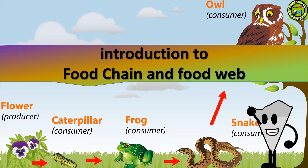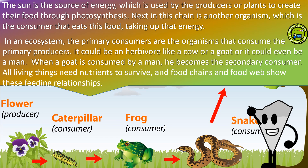Introduction to Food Chain and Food Web. The Sun is the source of energy which is used by producers or plants to create their food through photosynthesis. Next in this chain is another organism which is the consumer that eats this food, taking up that energy. In an ecosystem, the primary consumers are the organisms that consume the primary producers. It could be an herbivore like a cow or a goat, or it could even be a man. When a goat is consumed by a man, he becomes the secondary consumer.